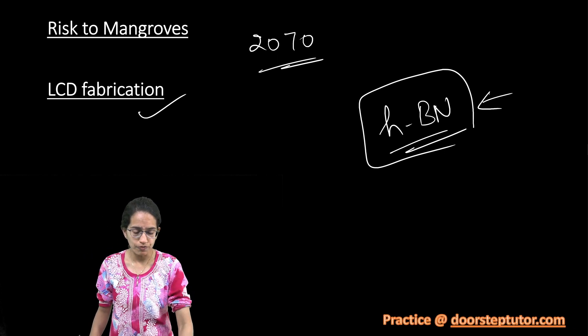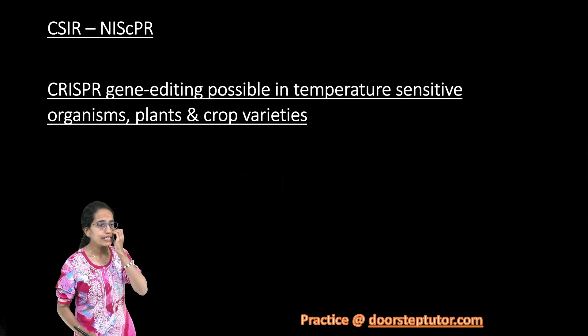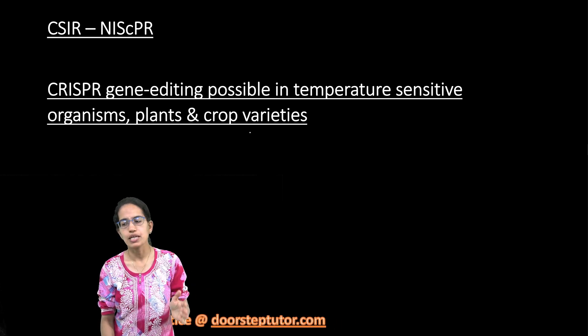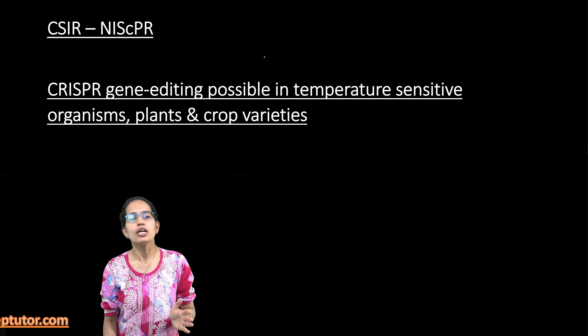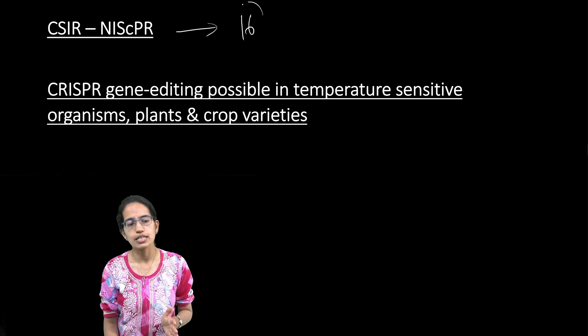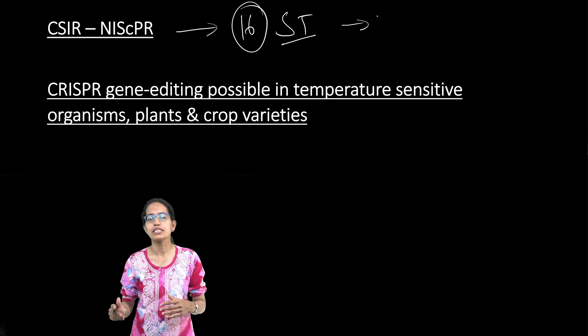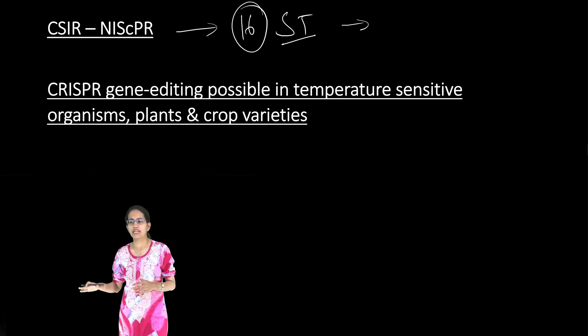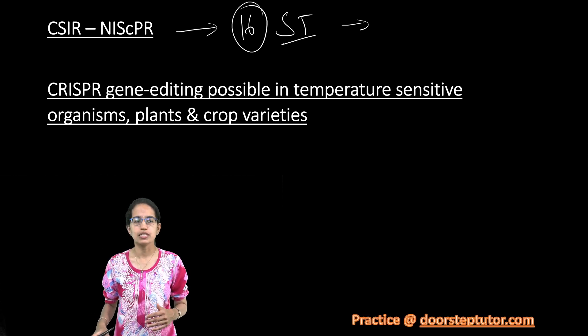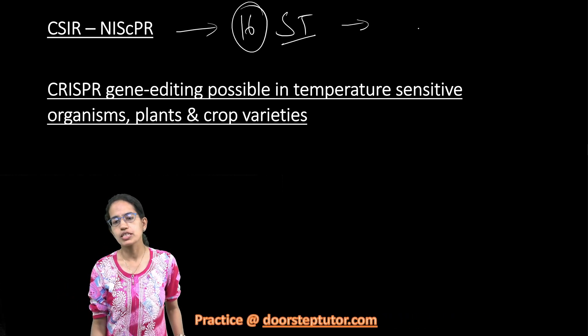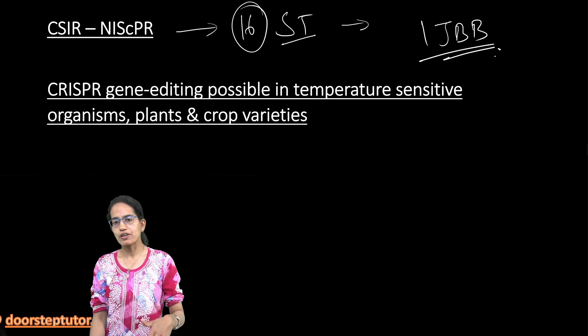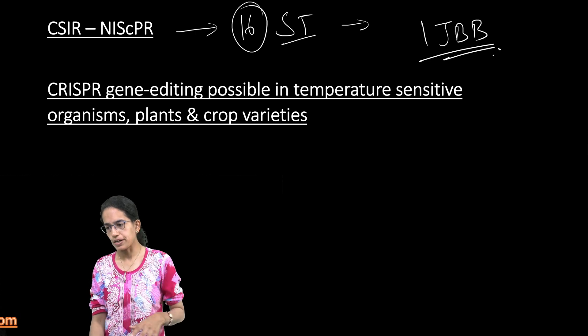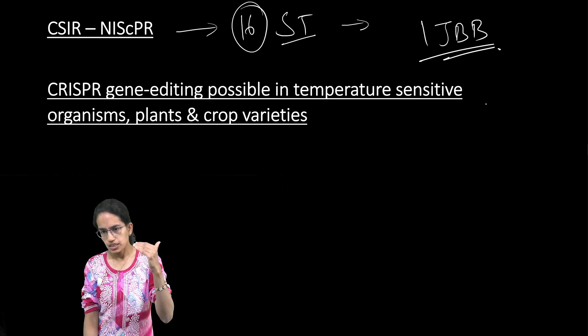The next is the CSIR NISCPR which is a leading publicly funded science communication and policy research institute. This has brought various nearly 16 journals on science and technology and all of them have been reputated with science citation index, the UGC care certification, and also the journal which is IJBB is a monthly premier peer-reviewed journal in the subject of biochemistry, biophysics and biotechnology.